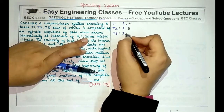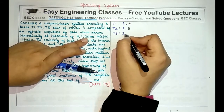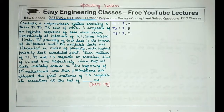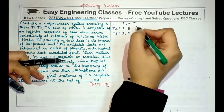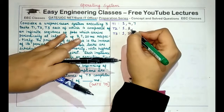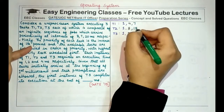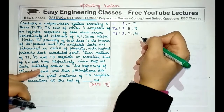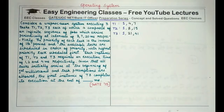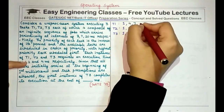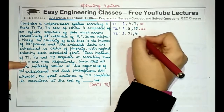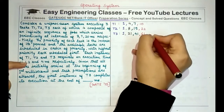The second instance of T3 arrives 20 milliseconds later than the first, at 21 milliseconds. Continuing in this manner, the third instance of T1 arrives at 4 plus 3 equals 7 milliseconds, the third instance of T2 arrives at 8 plus 7 equals 15 milliseconds. The fourth instance of T1 arrives at 10 milliseconds, T2's next at 15 plus 7 equals 22 milliseconds, and so on.